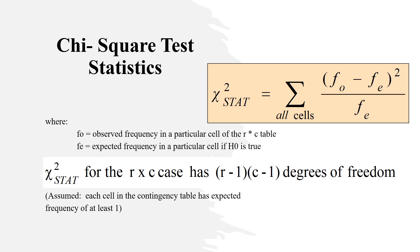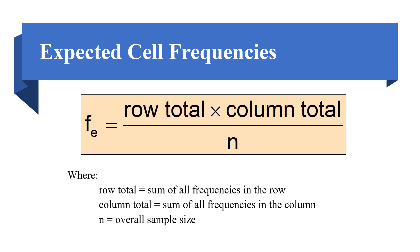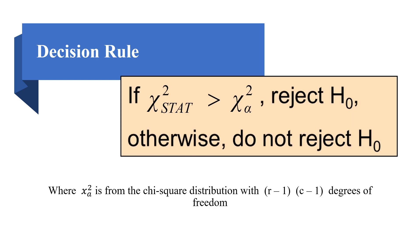Each cell should have an expected frequency of at least one. The expected cell frequency is calculated as: fe = (row total × column total) / n, where the row total is the sum of all frequencies in the row, the column total is the sum of all frequencies in the column, and n is the overall sample size. The decision rule remains: reject the null hypothesis if the test statistic exceeds the chi-square critical value with (r−1)(c−1) degrees of freedom.